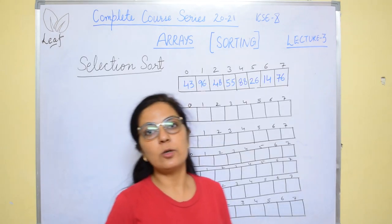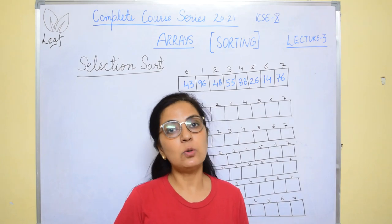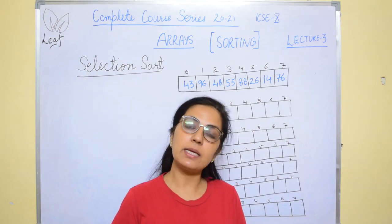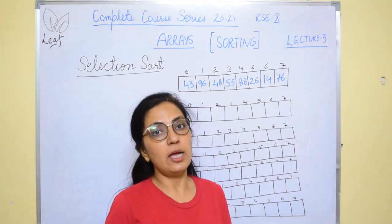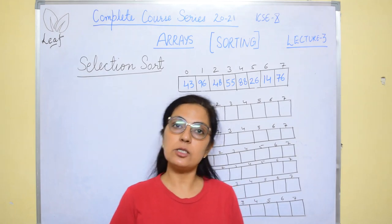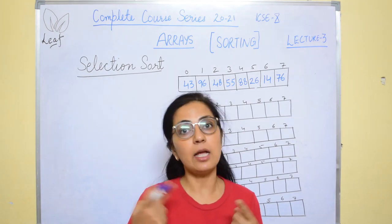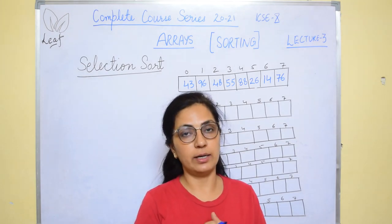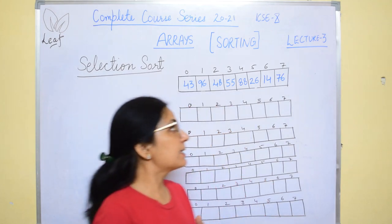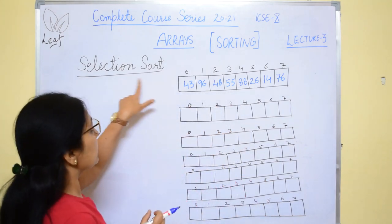Now, what is sorting? Sorting means to arrange the array elements in some particular order. If we take numbers, sorting can be either in ascending or descending order. Let's see the example of selection sorting.